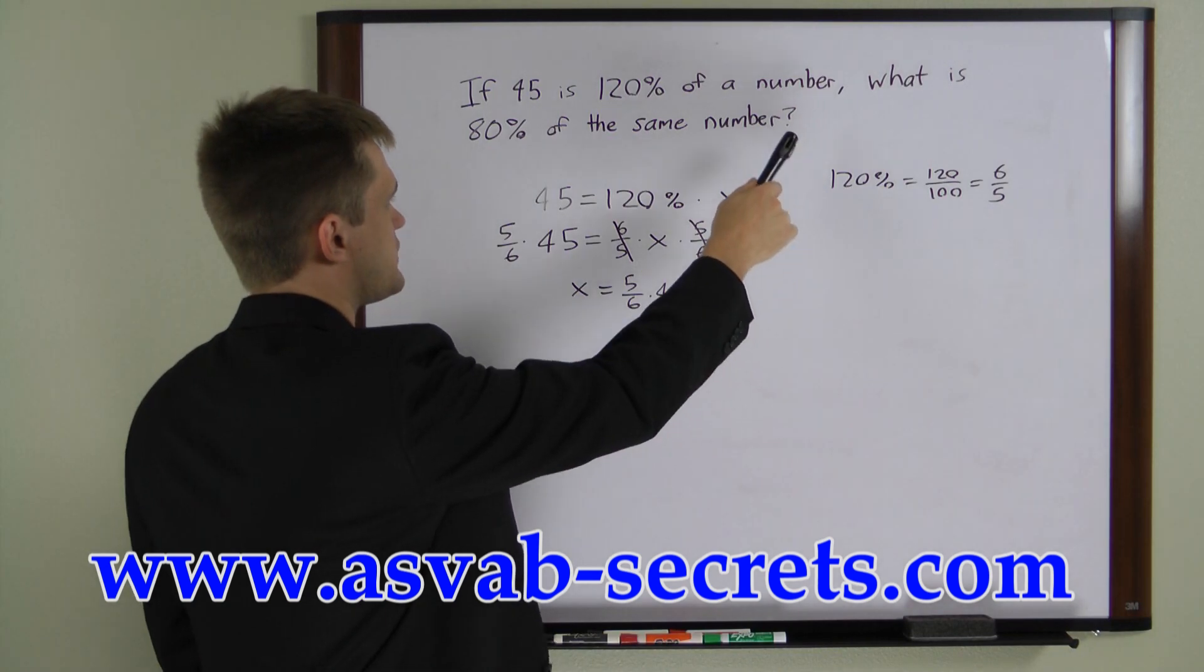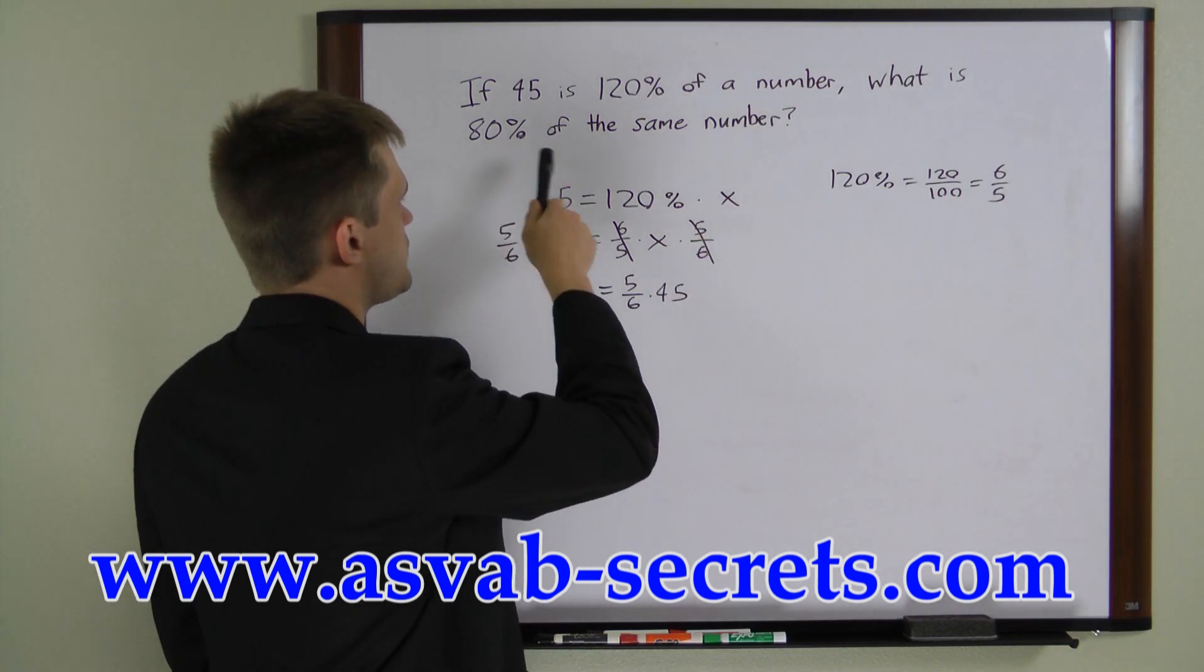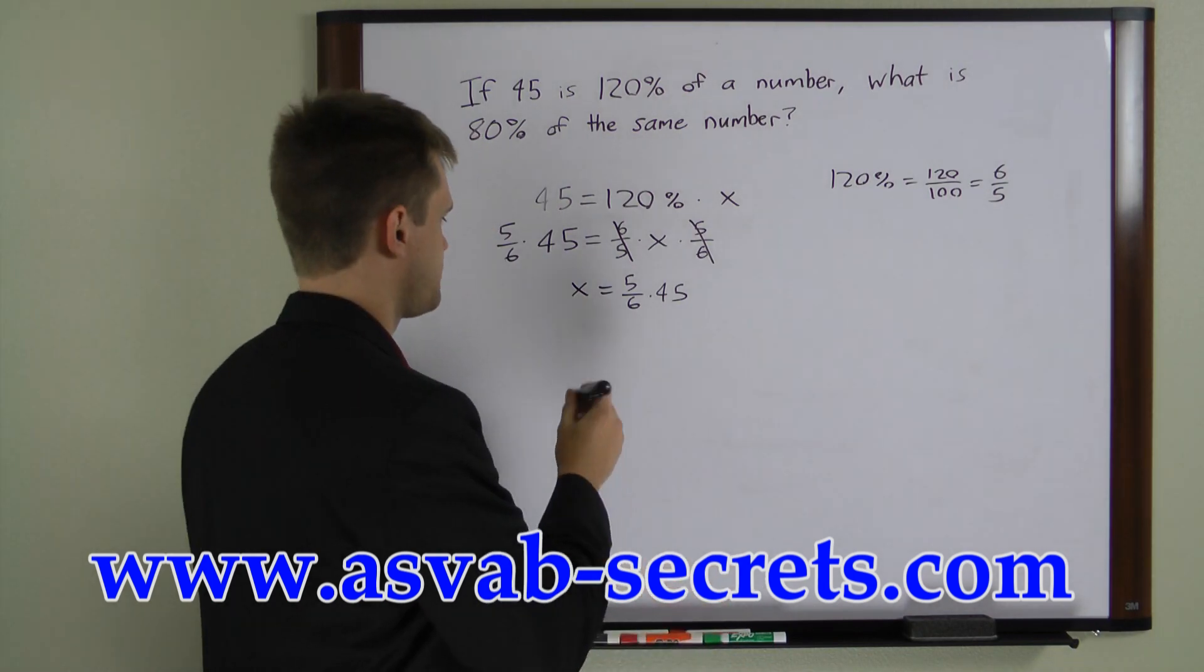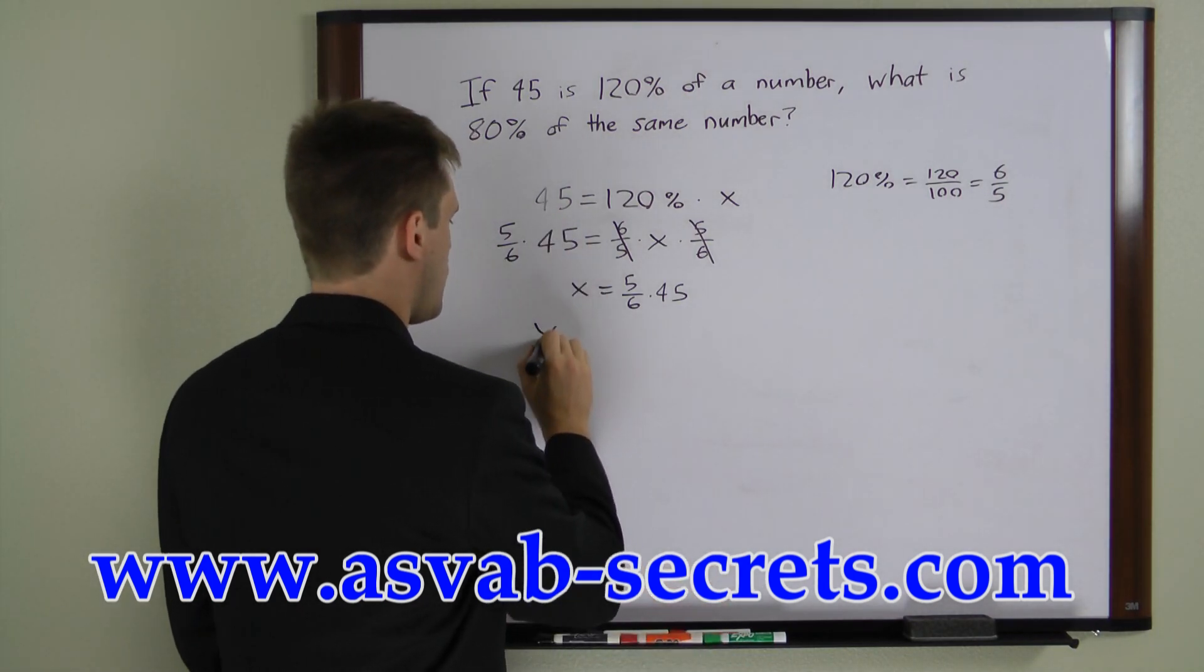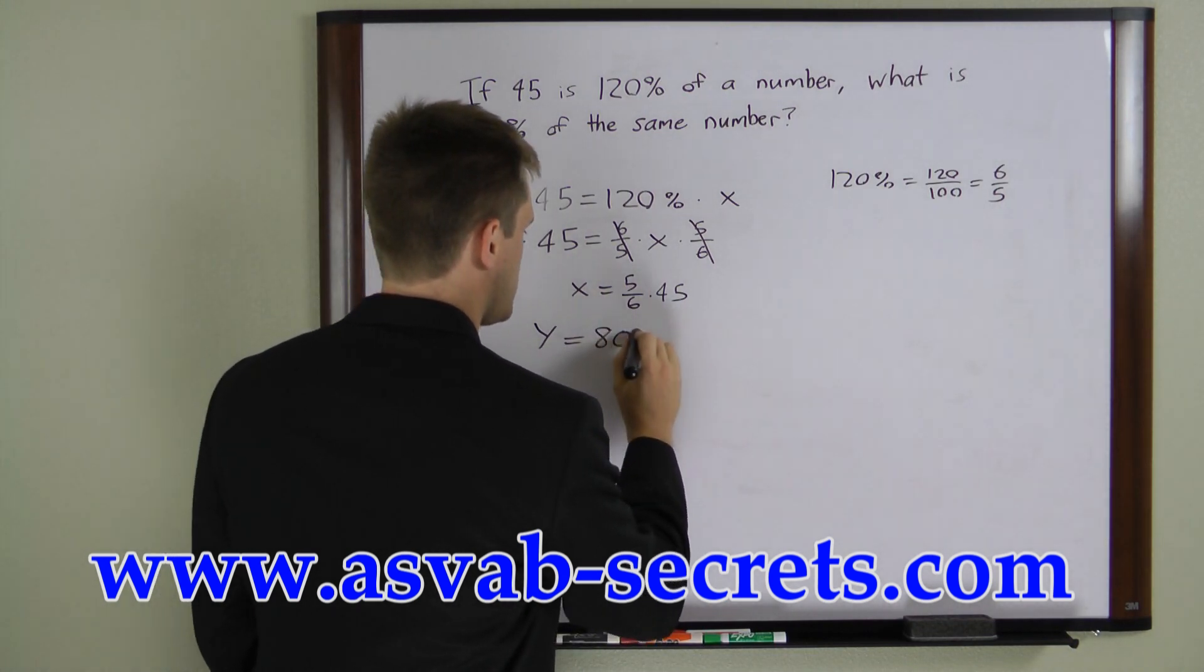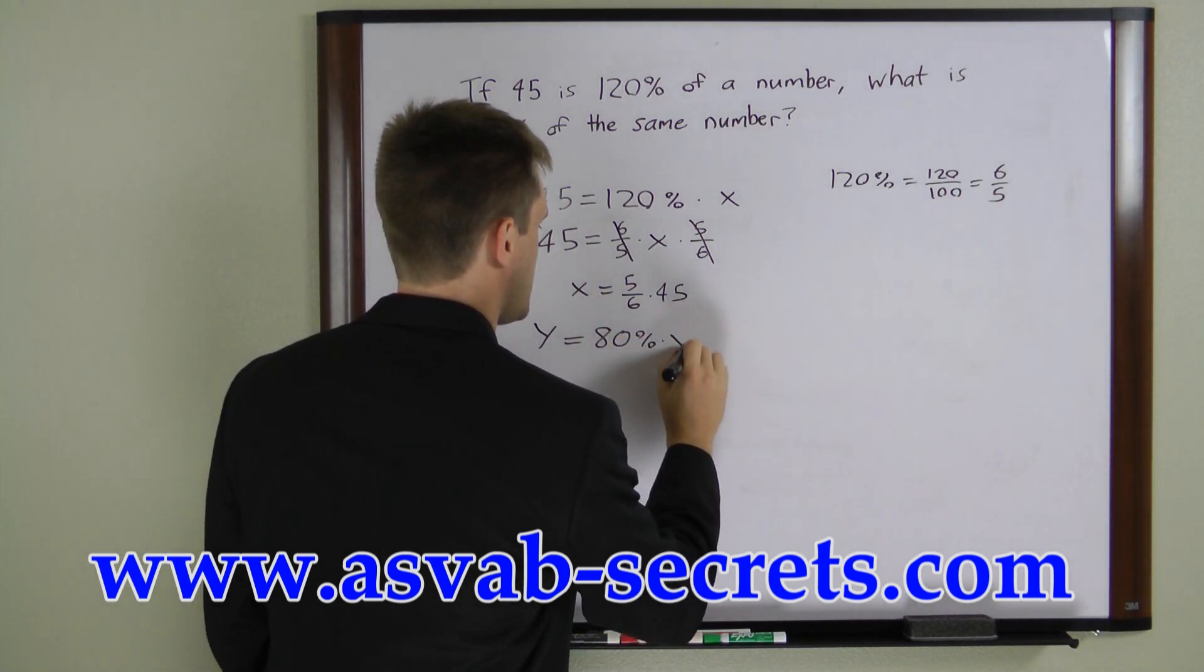The second part asks us what is 80% of the same number, or 80% of x. So this equation can be written where y is the number we're looking for: y equals 80% times x.